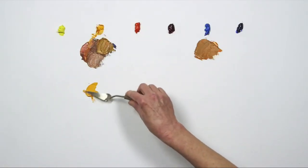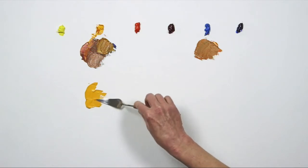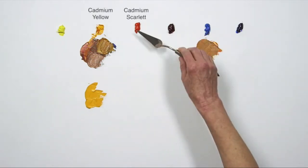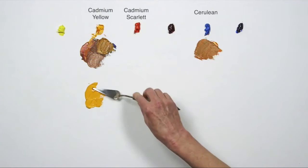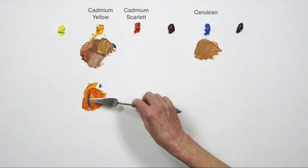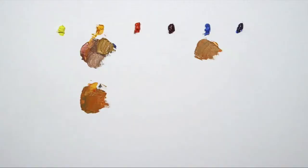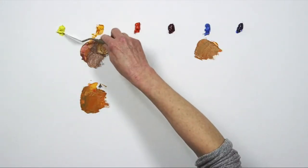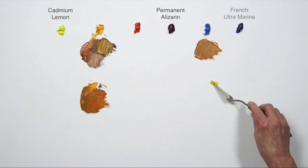There are many permutations of brown within this six-color palette. I can add cadmium yellow to cadmium scarlet and add cerulean, or cadmium lemon, alizarin, and ultramarine.